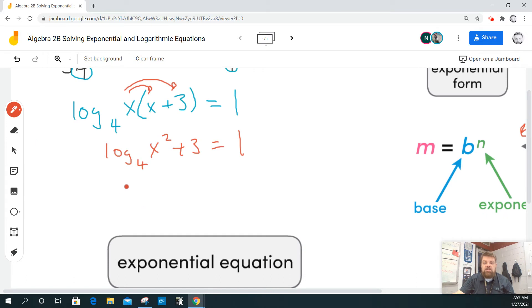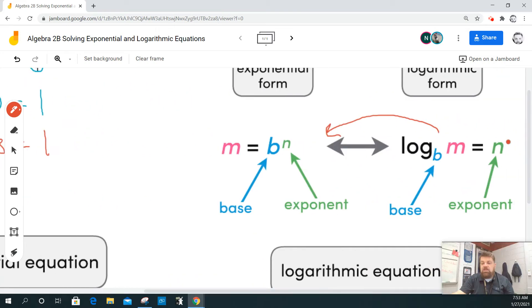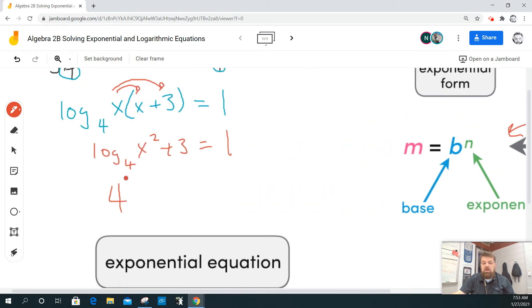So, my base is 4, right? So, I'm going to say 4 raised to my exponent. The exponent is actually the value, so my exponent in this case would be 1. So, 4 raised to the 1 is equal to x squared plus 3.